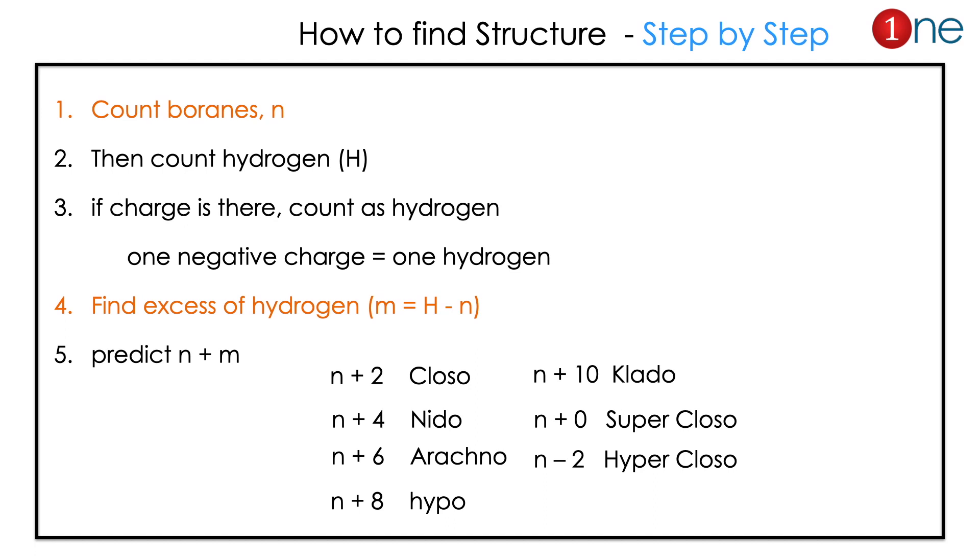One negative charge equals one hydrogen. Then you have to find the excess of hydrogen. The excess of hydrogen is m, boranes are n. So n + m: if you find n + 2, it means closo; n + 4 means nido; n + 6 means arachno; then hypo, klado, super closo, and hyper closo.